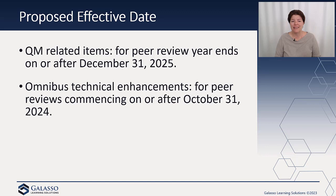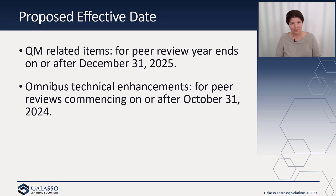The proposed effective dates align with quality management. For the quality management related items, it would be for peer reviews ending on or after December 31st, 2025, which aligns with the 2025 deadline to have your system of quality management up and running. For the omnibus items not related to quality management, it would be for peer reviews commencing on or after October 31st, 2024, so they don't have to be tied to the same effective date.